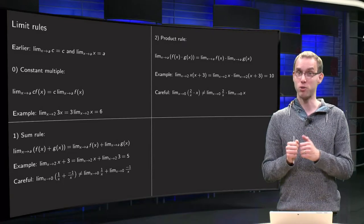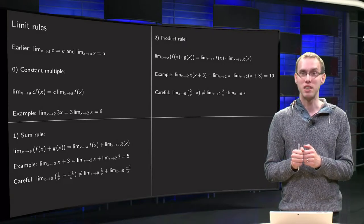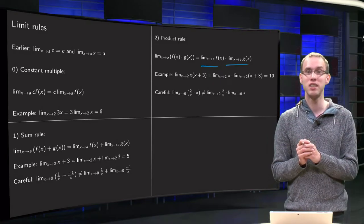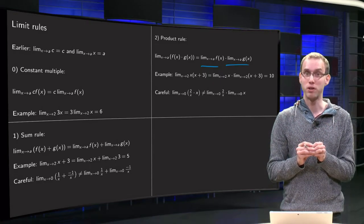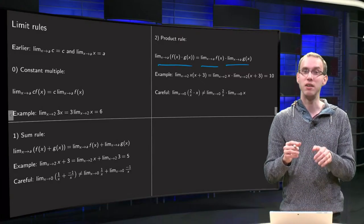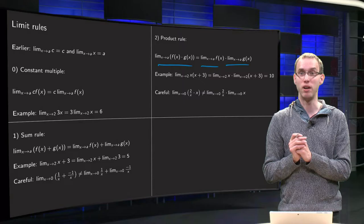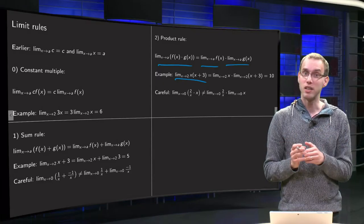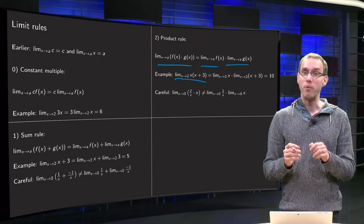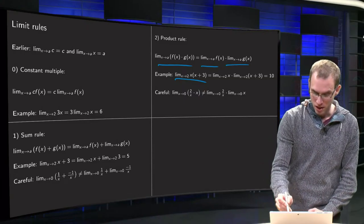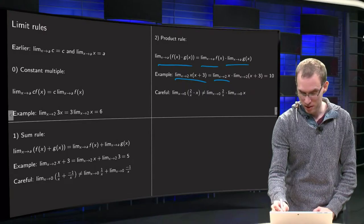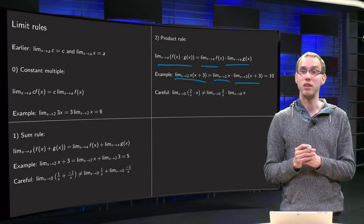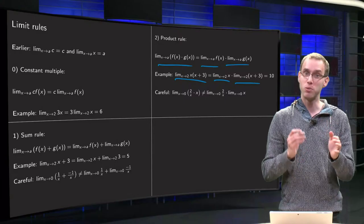Rule number 2: the product rule — very similar to the sum rule. It states that if the limits x to a of f and x to a of g both exist, then the limit of the product equals the product of the limits. So the limit of fg equals lim x to a of f times lim x to a of g. For example, for the limit x to 2 of x times (x+3), we apply the product rule: limit x to 2 of x times limit x to 2 of (x+3). The second one equals 5 and the first is a basic limit giving 2, so we get 2 times 5 equals 10.